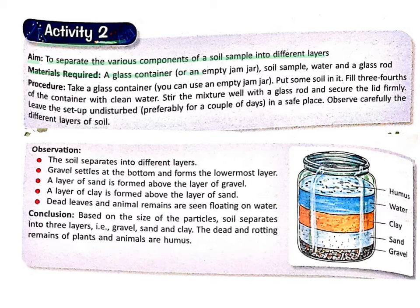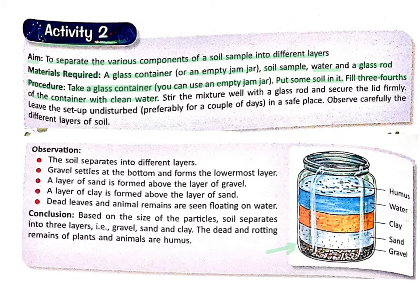Materials required: a glass container or an empty jam jar, a soil sample, water, and a glass rod. Dear children, you have to perform this activity at your home. Procedure: take a glass container — you can use an empty jam jar. The purpose of a glass container is to see through it, so it should be a transparent container. Put some soil in it, fill three-quarters of the container with clean water, stir the mixture well with a glass rod and secure the lid firmly. Leave the setup undisturbed, preferably for a couple of days in a safe place.